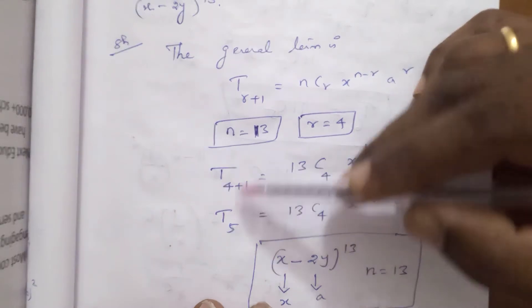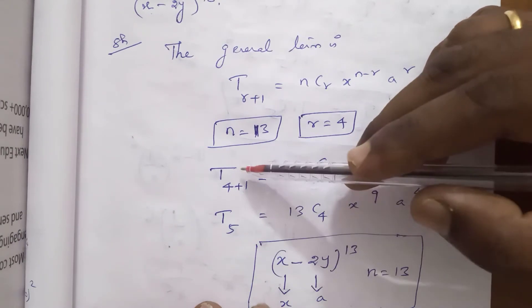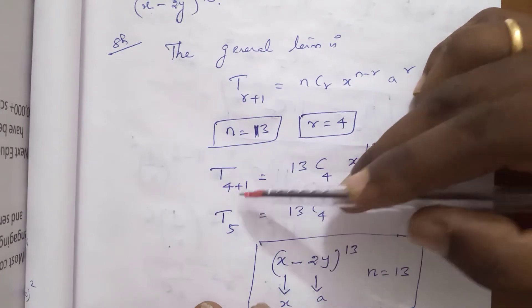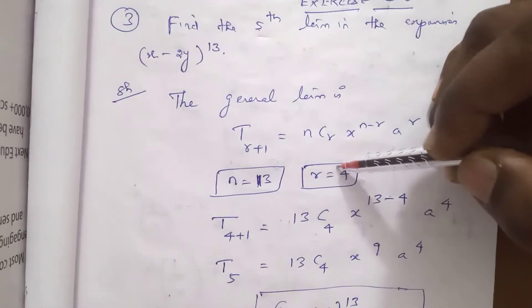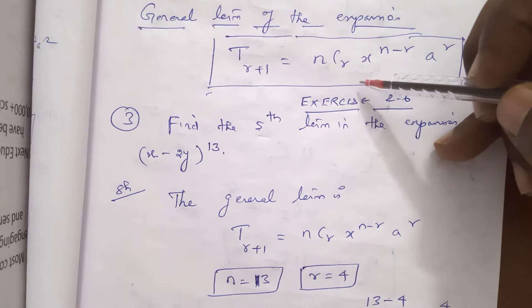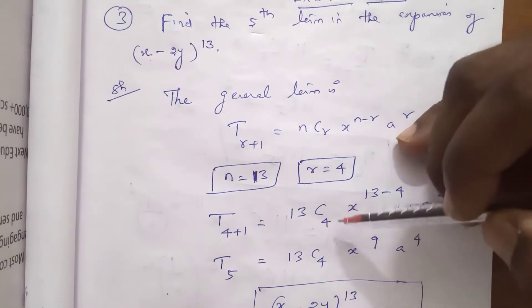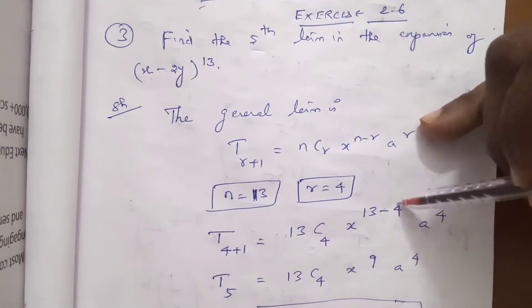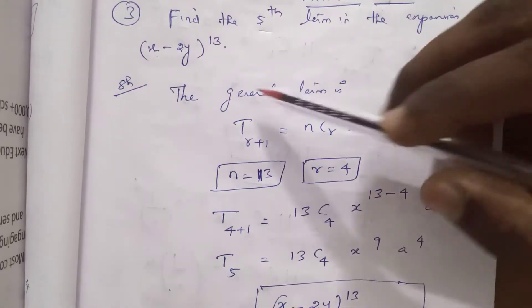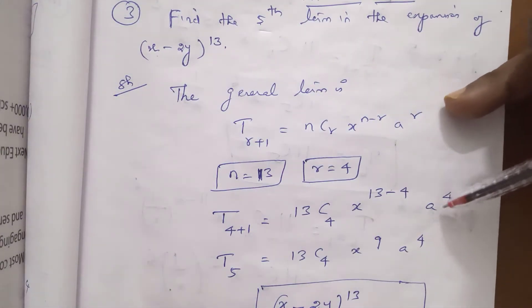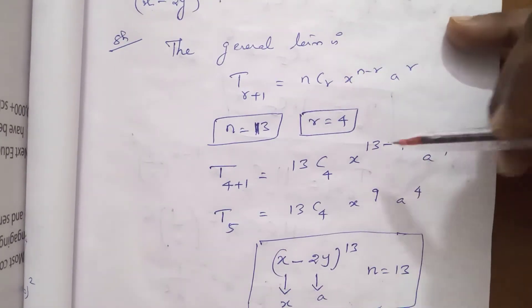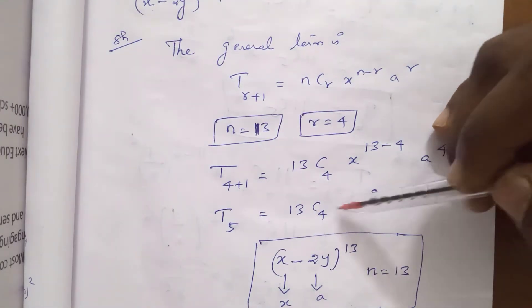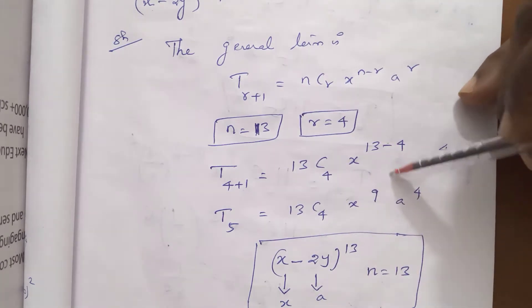So T(r+1) gives T(4+1) = T5. We compute T5 = 13C4 · x^(n-r) · a^r. Here a = 2y, so a^4 = (2y)^4. Therefore T5 = 13C4 · x^9 · (2y)^4.